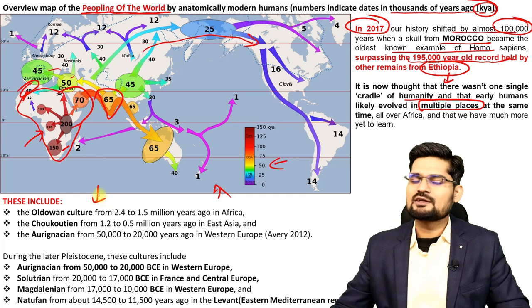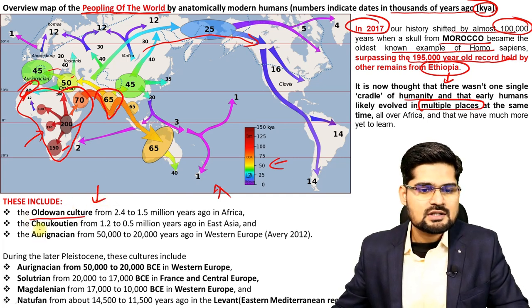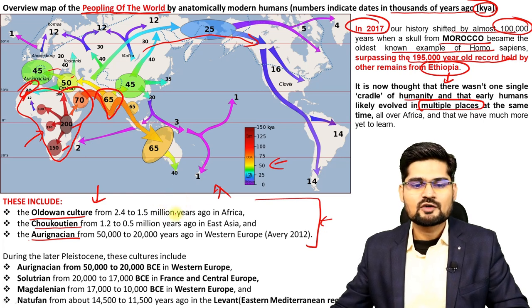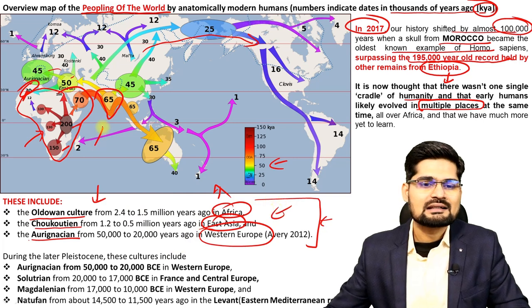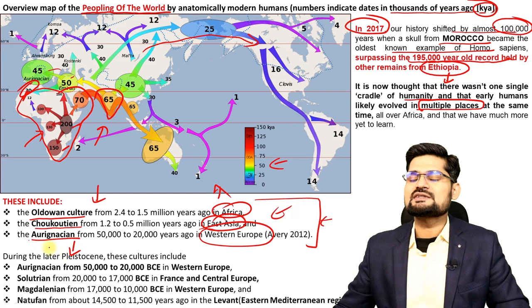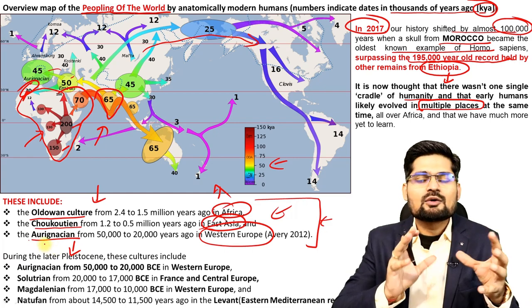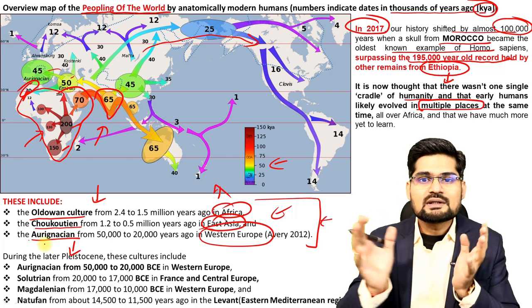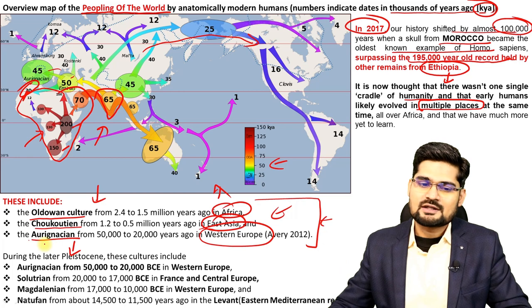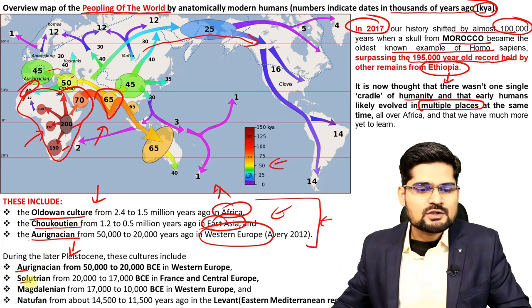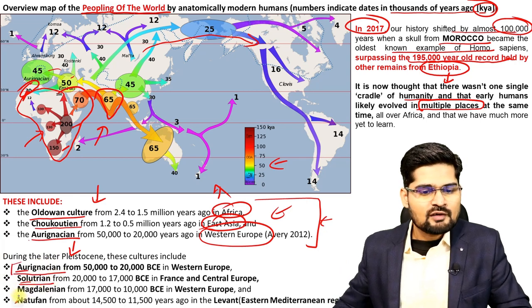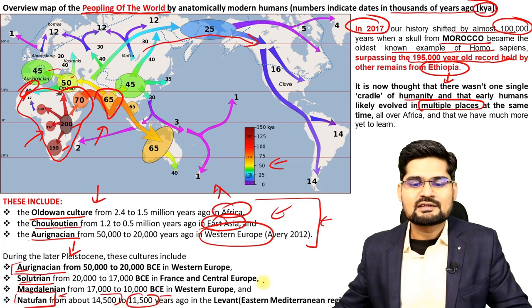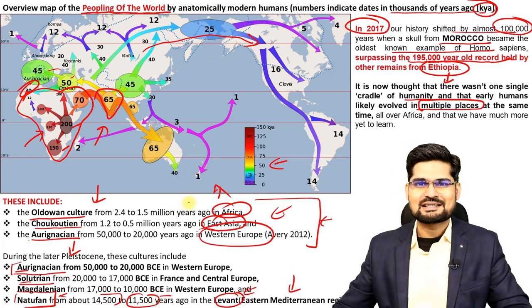The cultures that developed and migrated include the Oldowan culture, Chatelperronian culture, and Ignacian cultures. These migrated from Africa to East Asia, Western Europe, and other parts of the world. During the later Pleistocene — from 2.5 million years ago till 12,000 BCE — these cultures settled or traveled across the world. Notable cultures include the Solutrean and the Natufian, which existed from about 14,500 to 11,500 years ago in the Levant, east of the Mediterranean.